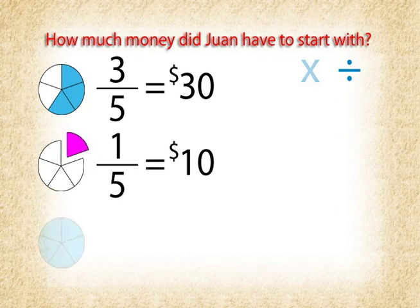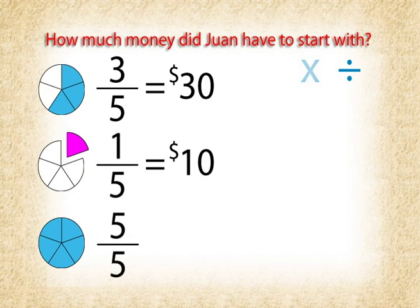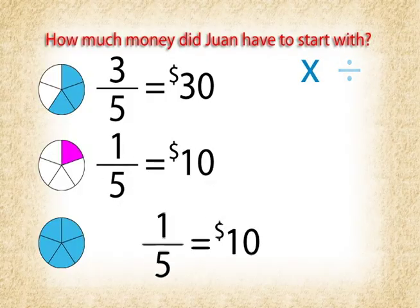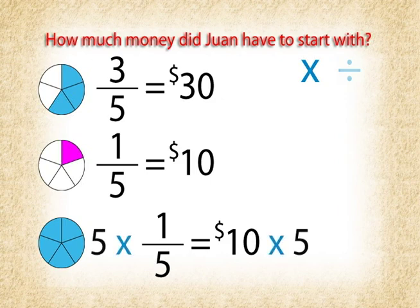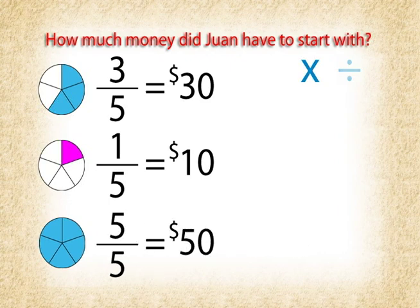We don't need to know what only one-fifth of his money is equal to. We really need to know what five-fifths, or all of his money, is equal to. But how would we go from one-fifth up to five-fifths? Multiply by five. That's right again, Tex. We have to multiply both sides of the equation by five. So one-fifth times five is five-fifths, and ten dollars times five is equal to fifty dollars. Fifty dollars is the amount he must have had at the beginning.